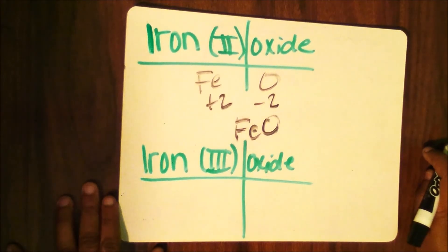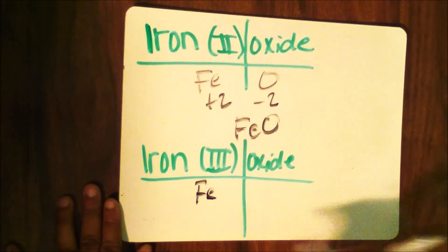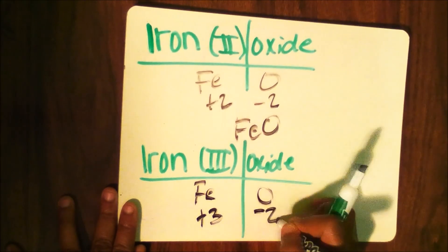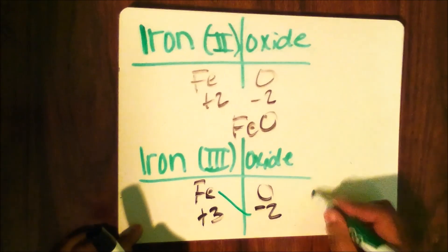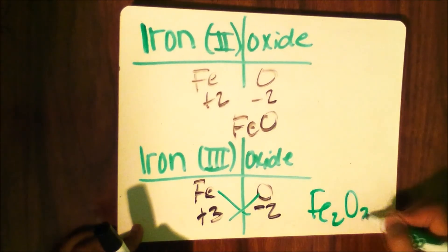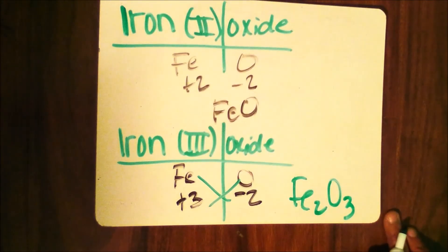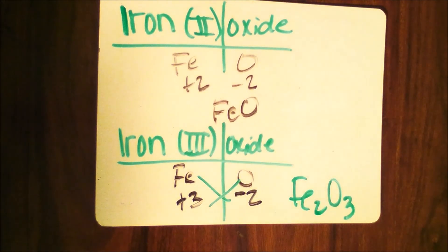The next example is iron(III) oxide. The charge for iron is 3, and the charge for oxygen is negative 2. They swap — iron picks up the 2, and oxygen picks up the 3 — giving you Fe₂O₃. Remember, you look at the back end of the formula name: the back end tells you what the Roman numerals should be and indicates what the charge is for iron.